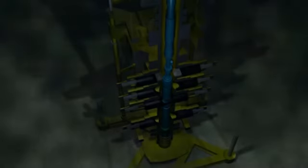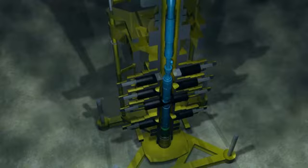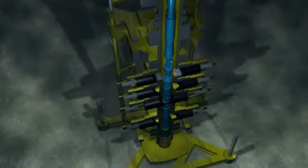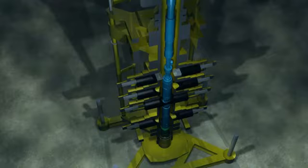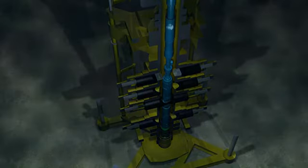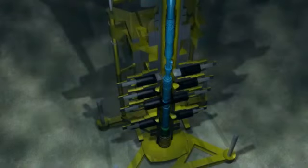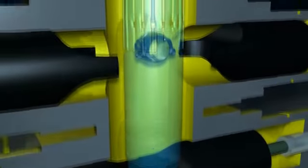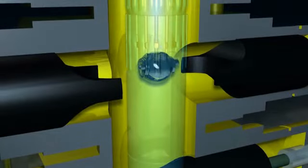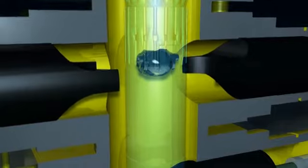The subsea test tree comprises two independently controlled fail-safe ball valves and an emergency disconnect system. Also within the EXPRO landing string, you will find a retainer valve and lubricator valves. Like all other landing string valves, the subsea test tree is controlled hydraulically from a control module on the rig via the landing string umbilical.